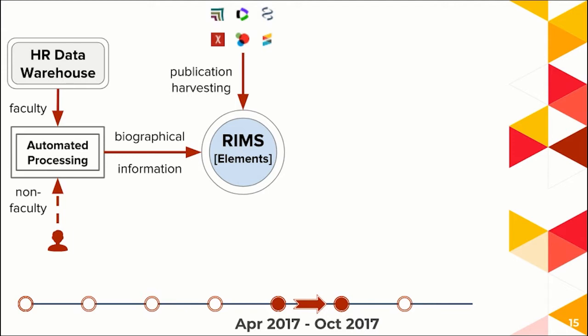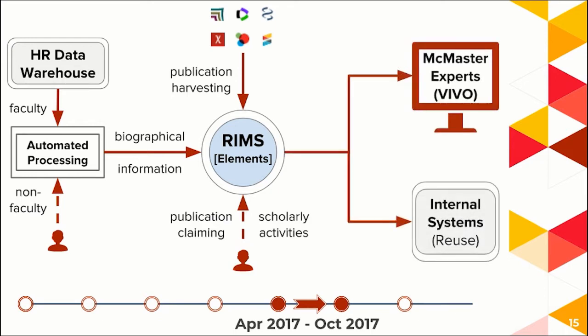There's still work required on the researcher's end in some cases to finish up publication claiming — to claim what's theirs and what's not. They also enter other relevant scholarly activities, which can be done by the researcher themselves or any delegates they allow. The information from the RIMS is then pushed out to the Vivo site as a front end, branded McMaster Experts, and the data is also available to other internal users via the API for uses including internal reporting and webpage content population.